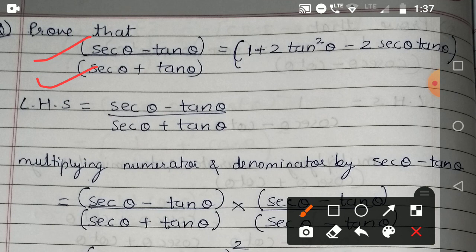1 + 2 tan²θ - 2 sec θ tan θ. So in these prove that sums, either you solve left-hand side and bring the right-hand side result, or you solve the right-hand side and bring the left-hand side result, or you solve both sides and bring a common result.